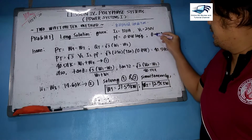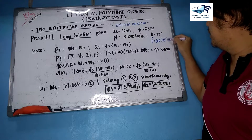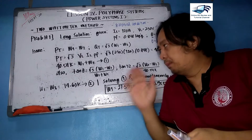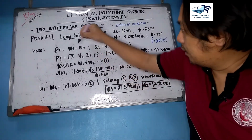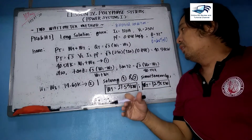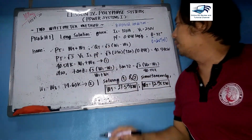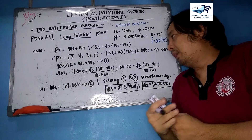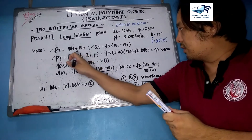We can get the angle by taking the inverse cosine of the power factor, as done in previous lessons on power factor correction. We recall the formulas for balanced condition: PT = W1 + W2, QT = √3(W1 − W2), and PT = VL × IL × power factor.